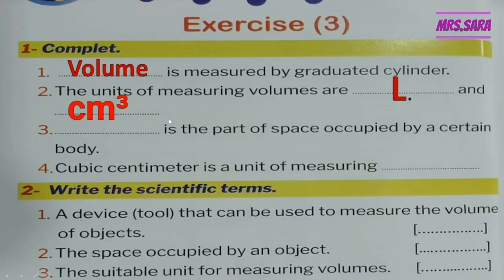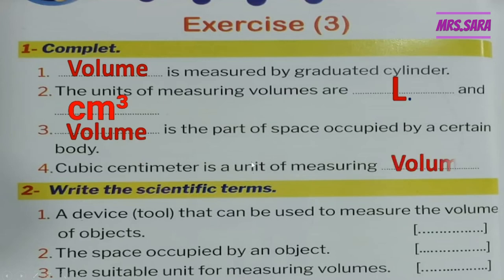Question three: What is the part of space occupied by a certain body? The magic word is 'space,' so the answer is volume. Question four: Cubic centimeter is a unit of measuring what? The magic word is 'unit,' so cubic centimeter is a measuring unit of volume.